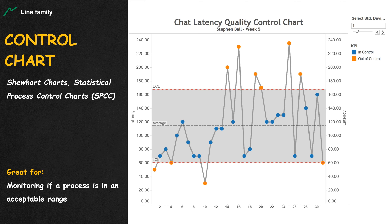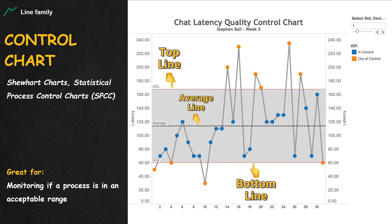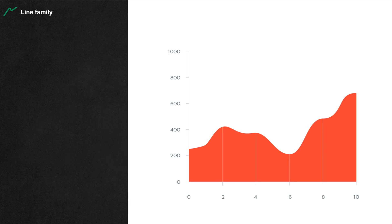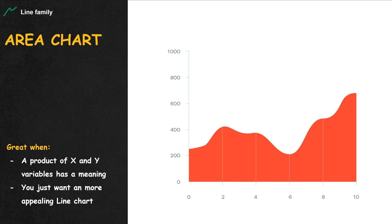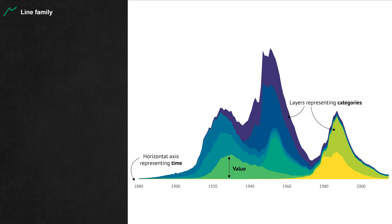In a control chart, the range is represented by two lines — one on top and one on the bottom — with another optional middle line for the average. When the product of whatever variables on the x and y axis has some meaning, we have the area chart. It's just like the line chart, but with the area between the line and the x-axis highlighted.